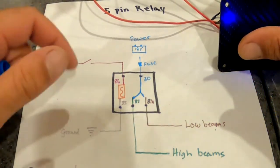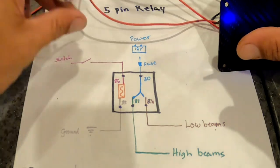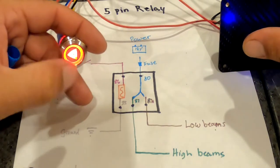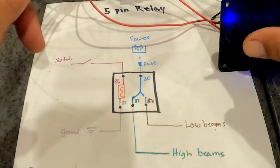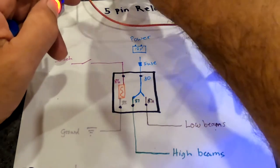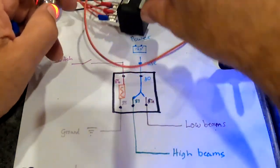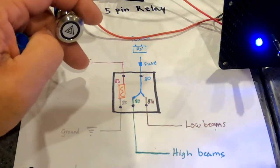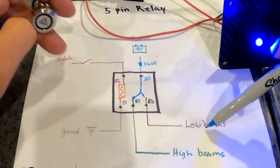So then, there'll be another switch to click the switch, and actually I can show you here. You'll click this switch, now see that come on? Now 87A is hot, because I actually have a 5-pin relay hooked up right here. And then when I turn that off, it goes back to 87A, and turns your low beams on.